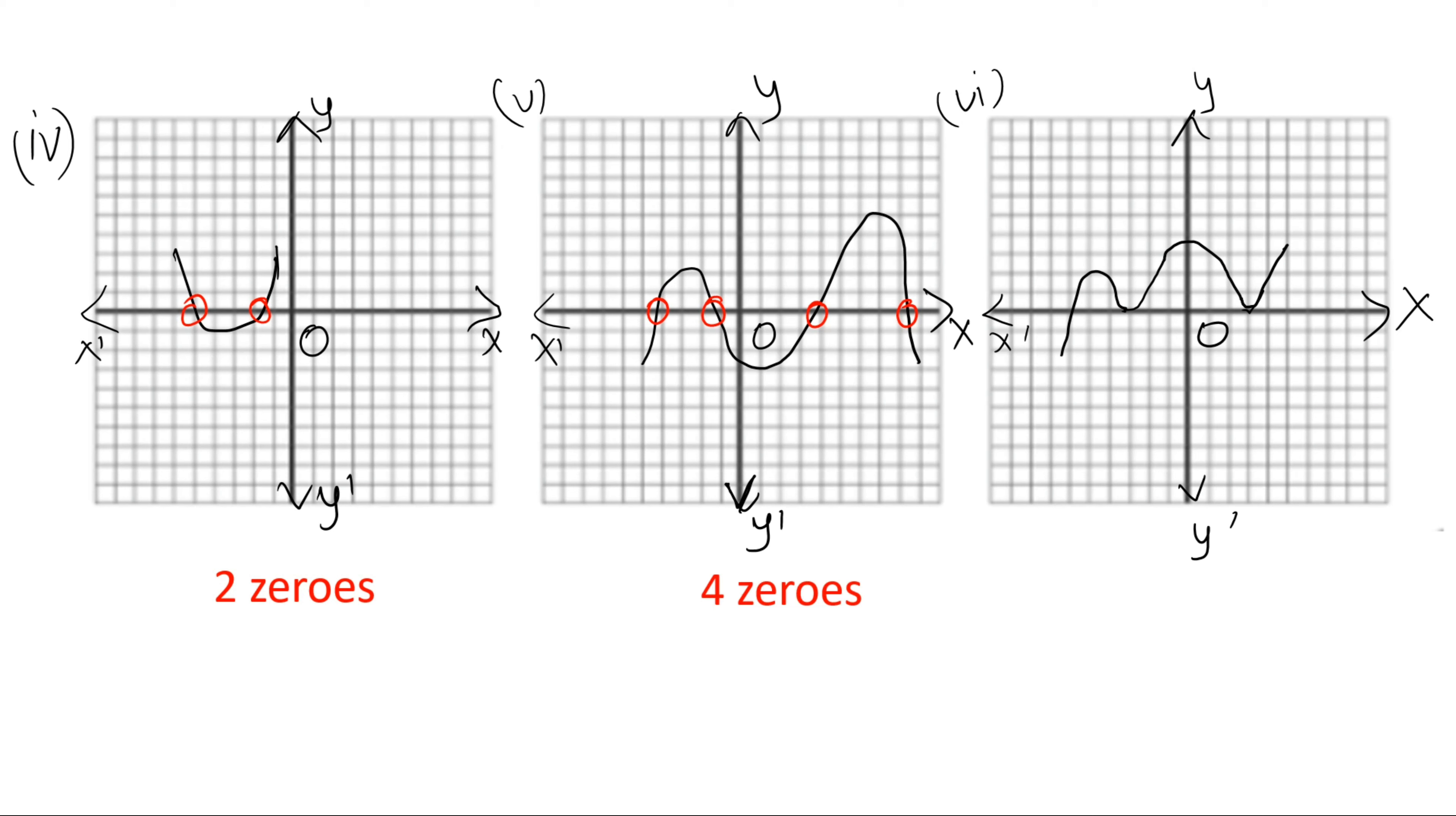And the last one, it's crossing here. It's touching the x-axis here and again touching the x-axis here. That means there are three zeros for the last one. So it's as simple as that. All you have to do is see where the graph is crossing the x-axis or touching the x-axis and those will be the zeros. Thank you.